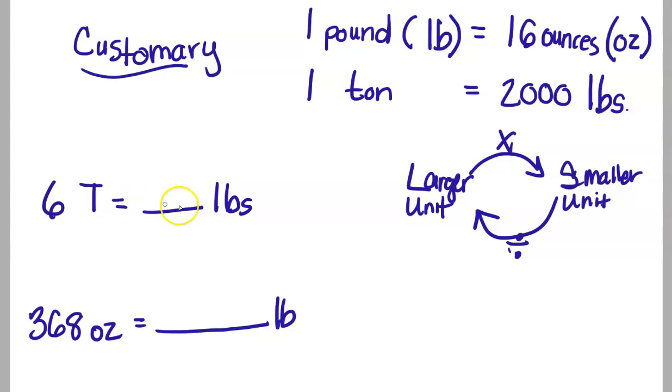So in our first example, we have 6 tons equal to how many pounds? Well, I know that I'm going from tons to pounds, larger to smaller. I'm going to multiply. I'm going to look at my chart to see how many pounds are in a ton, and there are 2,000. 6 times 2,000 is going to be 12,000. So 6 tons is equal to 12,000 pounds.